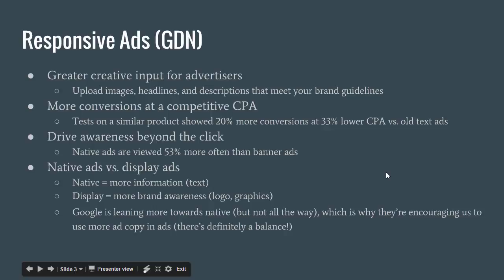So let's go over some of this. We have greater creative input for advertisers — we can upload images, headlines, and descriptions that meet your brand guidelines. They found more conversions coming from the new responsive ads versus the old ads. Tests on a similar product showed a 20% increase in conversions at a 33% lower CPA — cost per acquisition — compared to the old ads. The new responsive ads are going to be strictly better than the old ads, assuming you're using conversions and cost per conversion as your KPI.